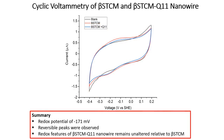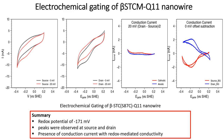The cyclic voltammogram of the fusion protein and the nanowire show that the nanowires retain their native reduction potential of the STCM, which was a constituent of the nanowire. Results from electrochemical gating suggest that electrical conductivity occurs along the length of these structures, and that the mechanism is cytochrome-mediated due to the presence of the redox protein as arrays along the length of the nanowire.